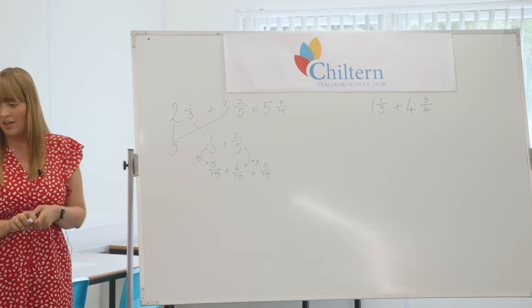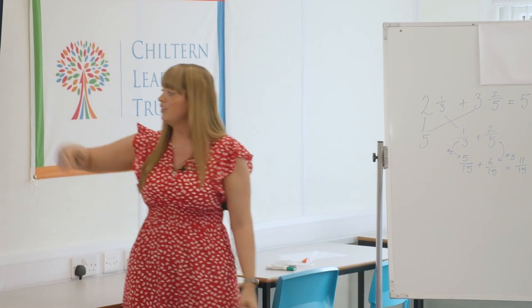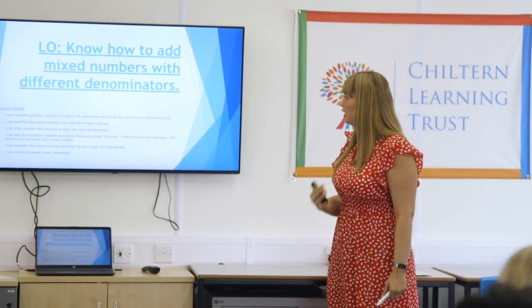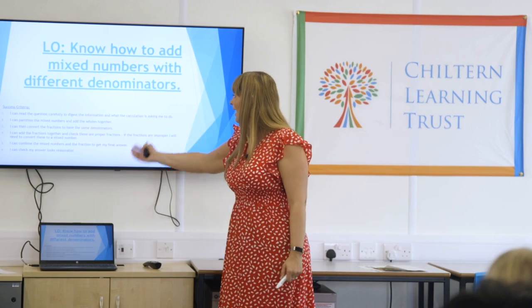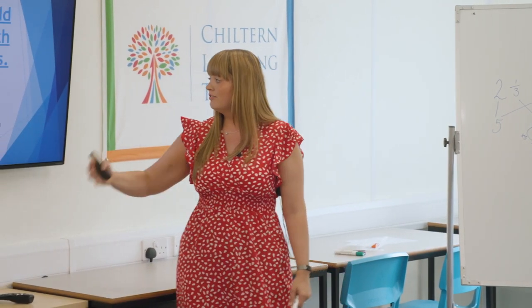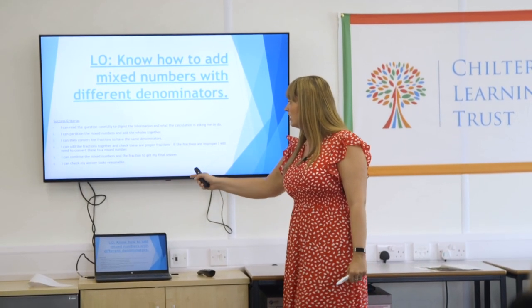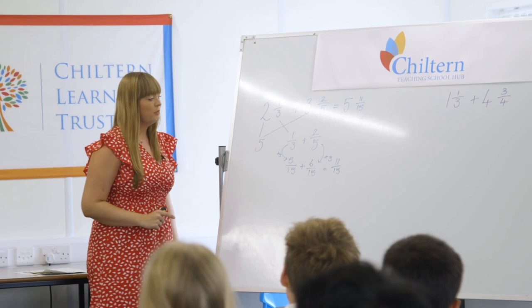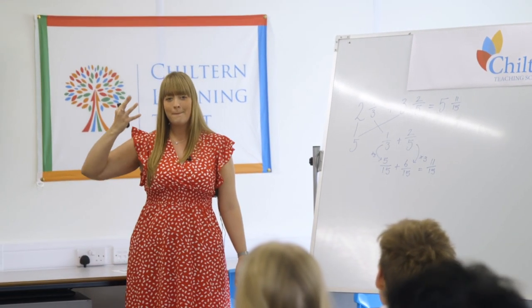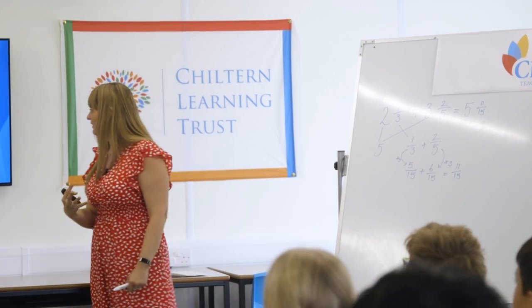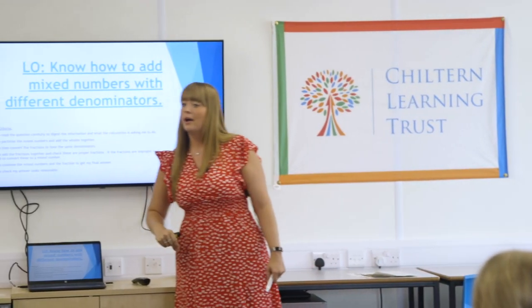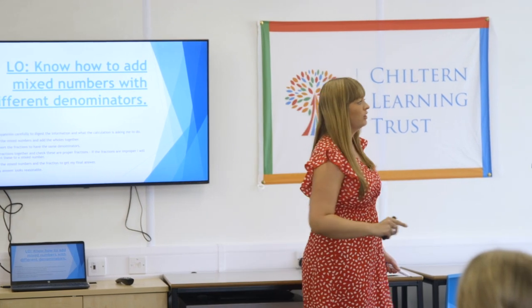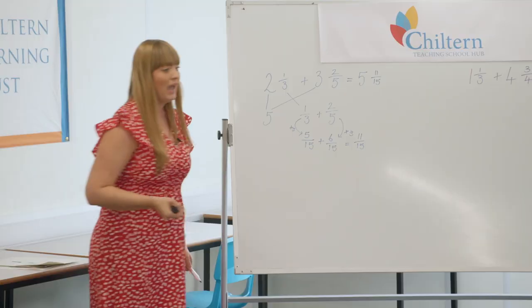Are we all happy with that? When I've done that, I'll review by looking at my success criteria. We digested the information and made sure we understood the question; we partitioned the mixed numbers and added together the wholes; we converted the fractions to ensure they had the same denominator, then pulled it back together. Something to really look out for is that these are proper fractions — if it was an improper fraction, the numerator would be bigger than the denominator. Then I would combine them back together to get my answer. It's really important to check it looks reasonable.